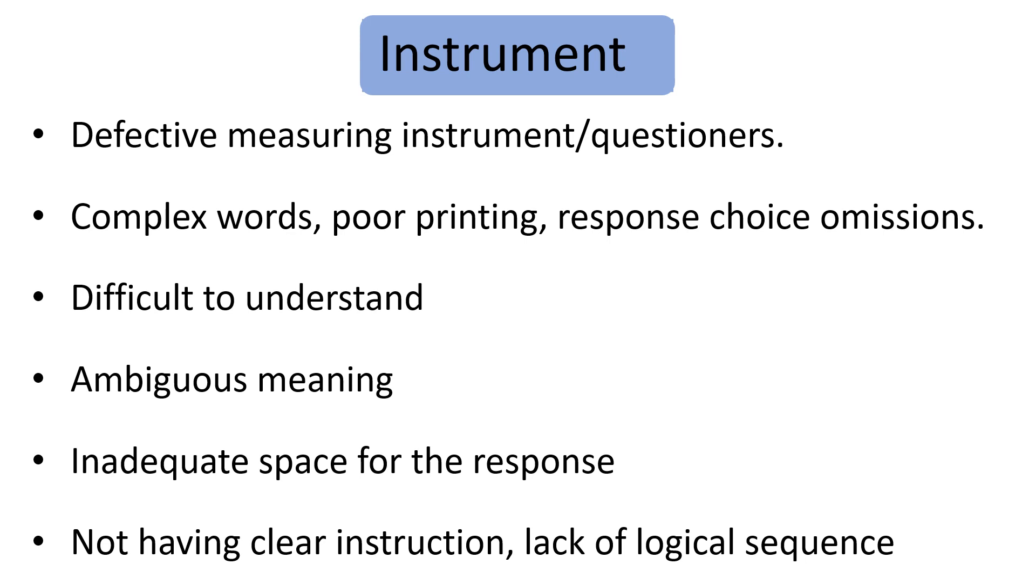And the other is difficult words to understand. If we incorporate difficult words to understand by the respondent, or if there are ambiguous words having a meaning of more than two, we have to omit that to reduce errors. Or if there is inadequate or insufficient space for the response provided by the respondent, we may get only incomplete answers. And the other source is if we don't have clear instructions for the questionnaires, and if there is a lack of logical sequence for the questionnaires, the respondent may provide an answer which is incorrect and incomplete.